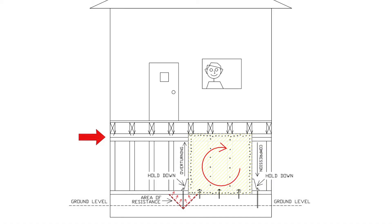Here's an illustration of how hold-downs work. As the earthquake force pushes against the top of our shear wall, the shear wall tries to overturn. When it tries to overturn, it pulls up on the hold-down. The hold-down in turn pulls up on the bolt, which is epoxied very deep into the concrete. This in turn pulls up on the concrete itself, which is very heavy. The weight of the concrete keeps the shear wall from overturning.